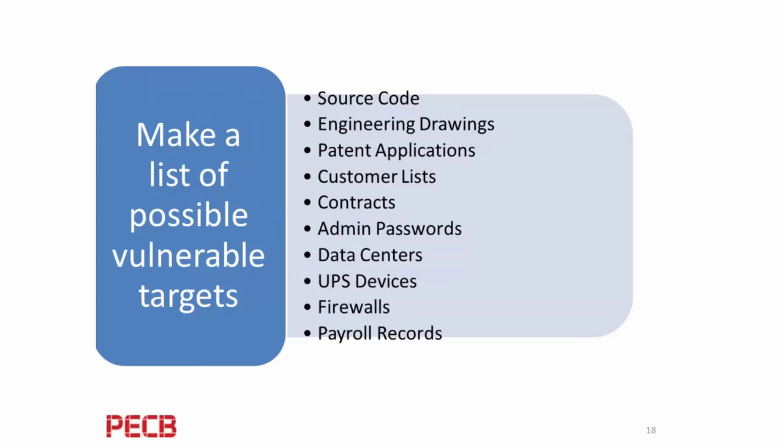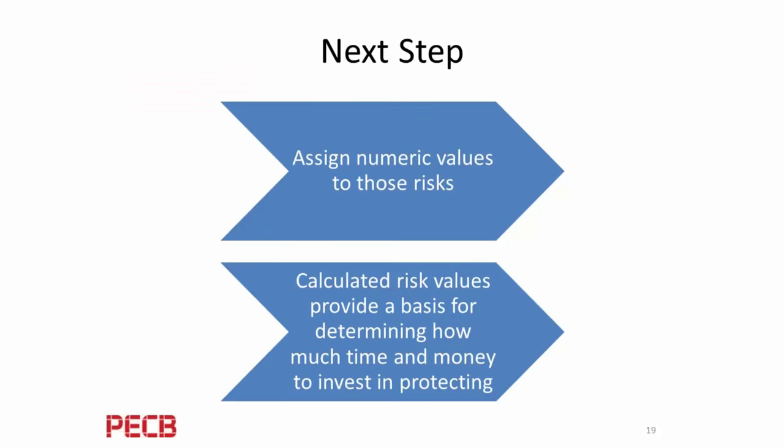Make a list of possible vulnerable targets — your engineering drawings, patent applications, things you may not be considering as much. You want to assign numeric values to those risks, similar to business continuity tiers: Tier 1, Tier 2, Tier 3, or high, medium, low. Determine how much time and money to invest in protecting each. ISO 27001 breaks down some of the formats for doing this. You'll need to assign values so there's common knowledge among your SOC and cybersecurity people about what you're looking at.